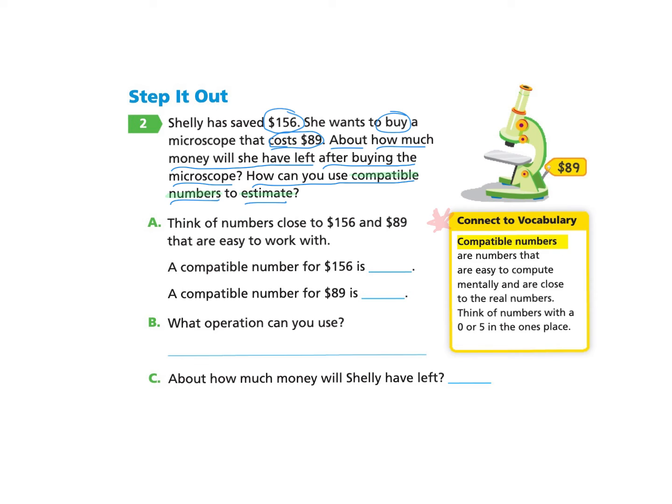And it shows us that compatible numbers are just numbers that are easy to compute mentally and that are close to the real numbers. And the hint they give us is think of numbers with a 0 or a 5 in the ones place. Those are usually the easiest for us to compute mentally. All right, now let's go back to the problem.